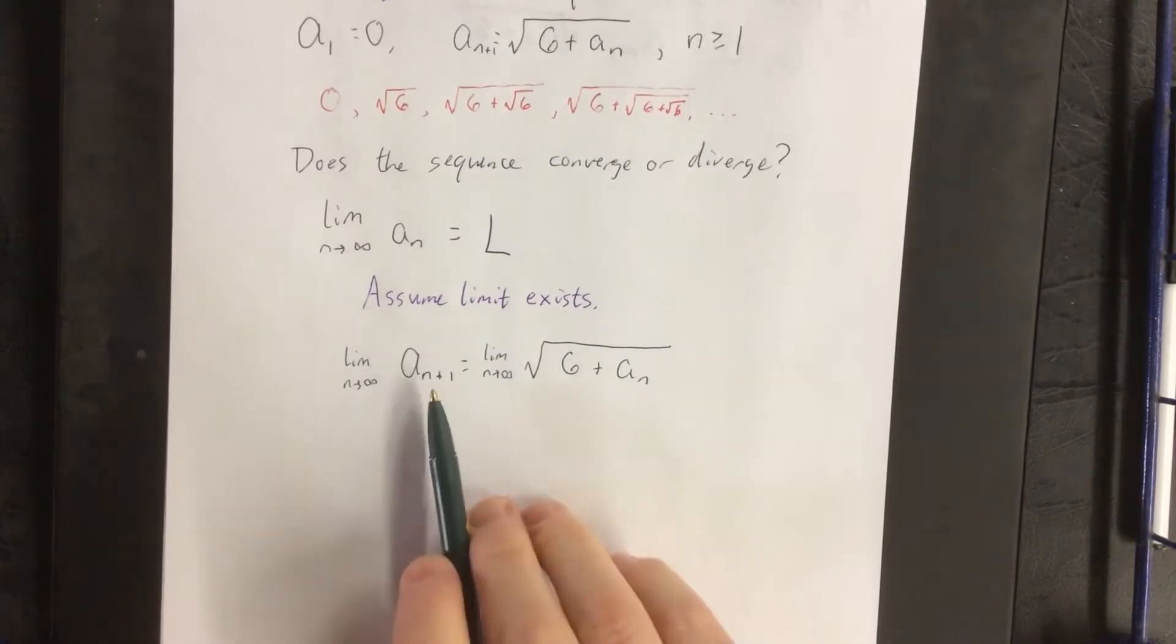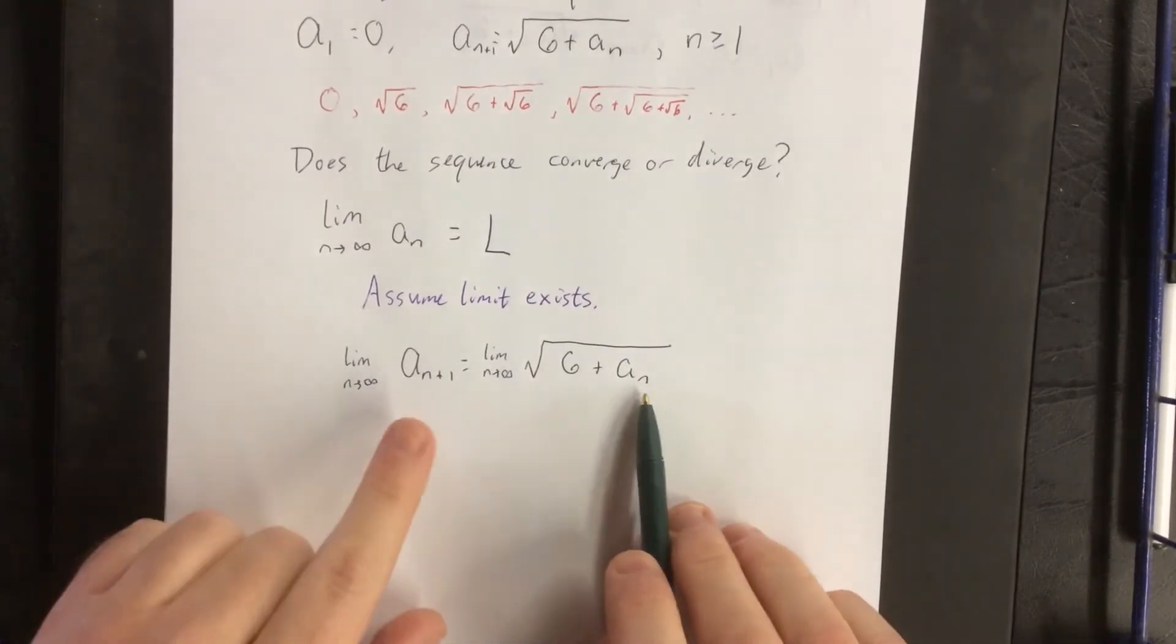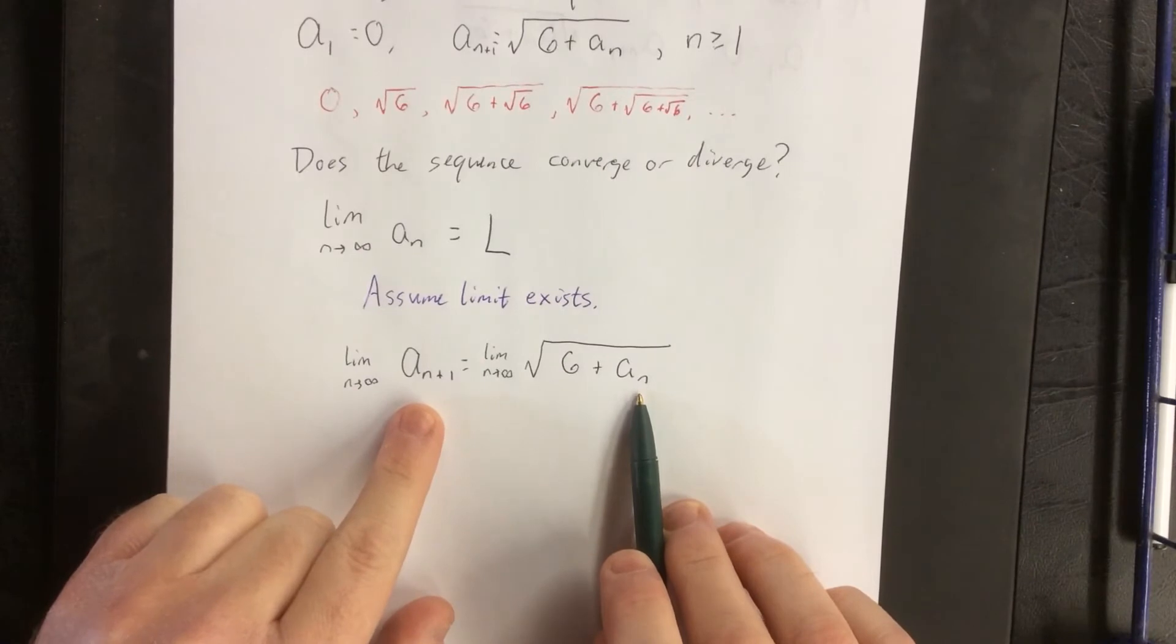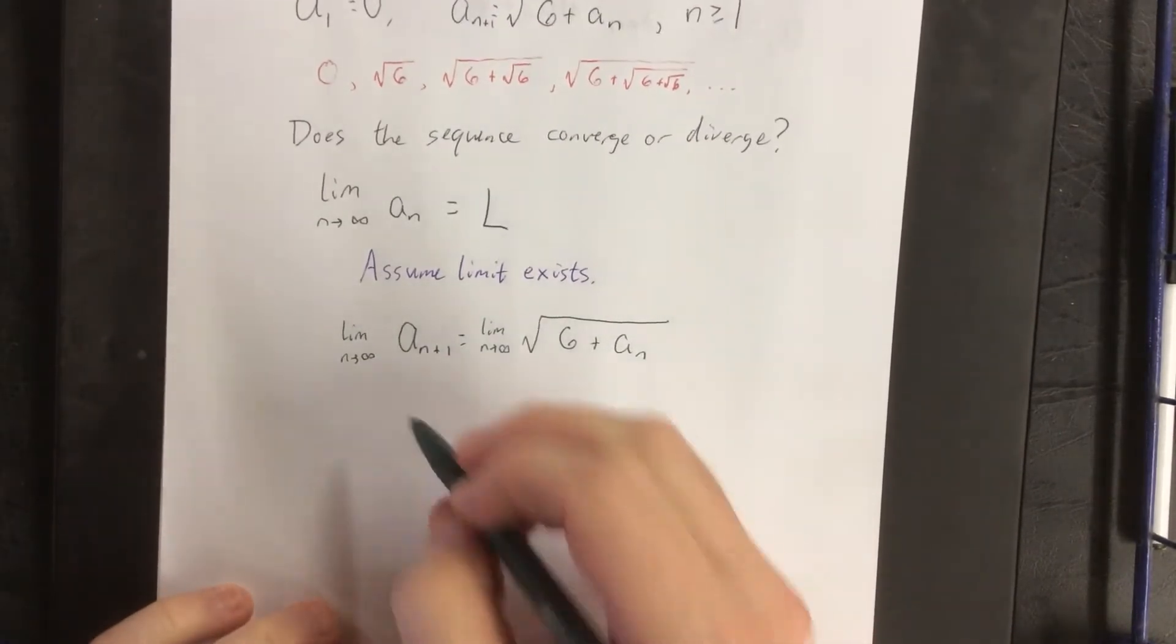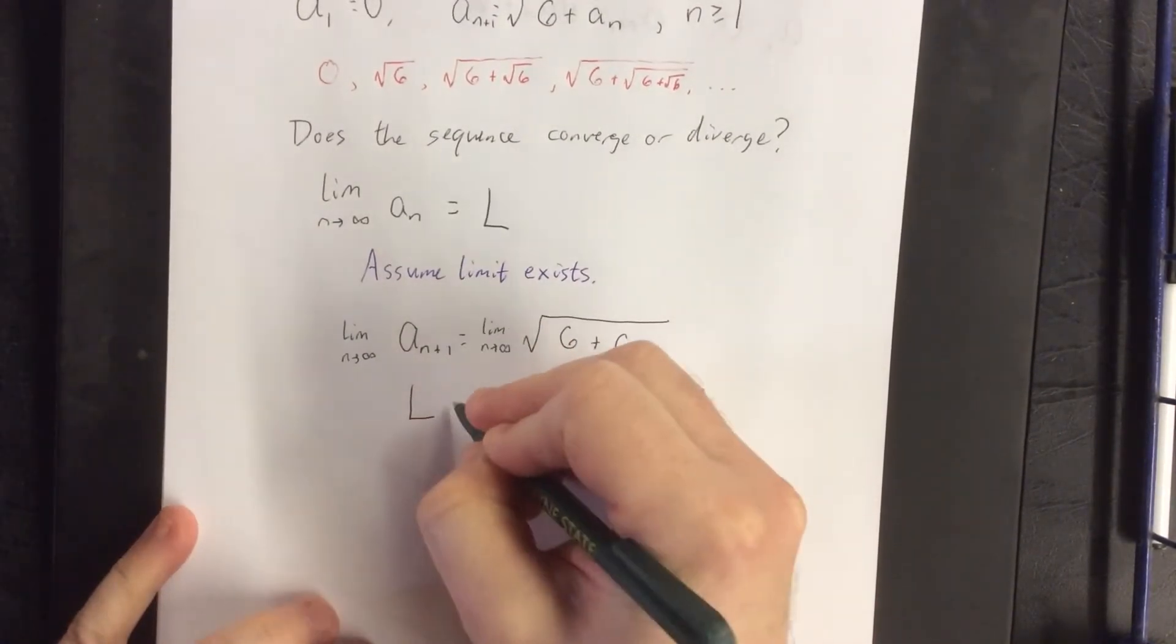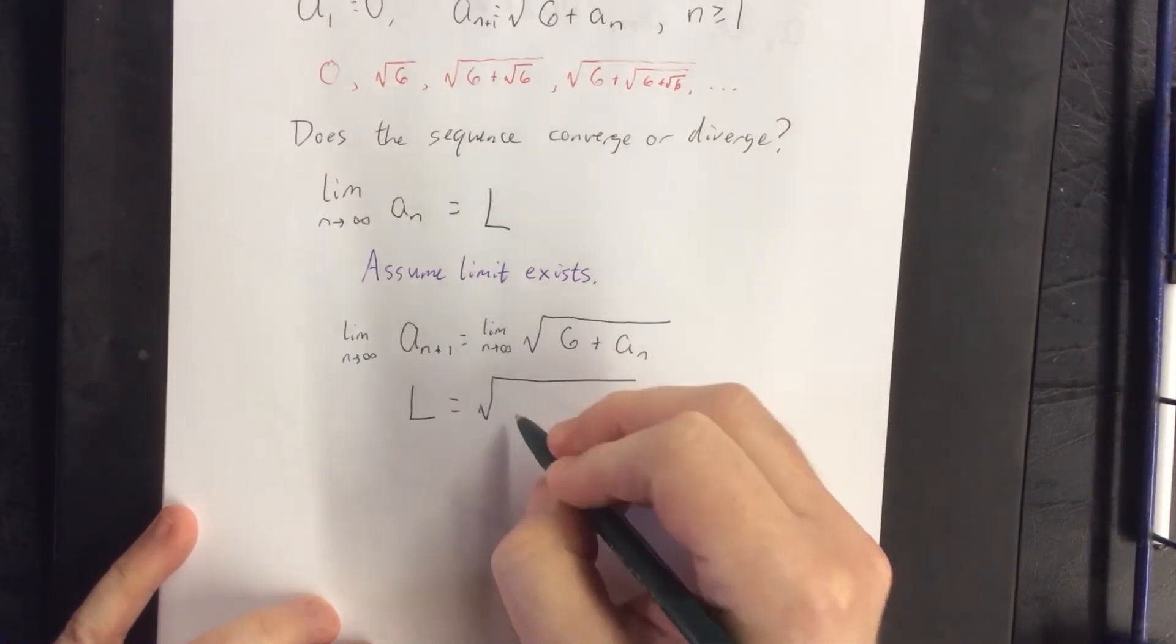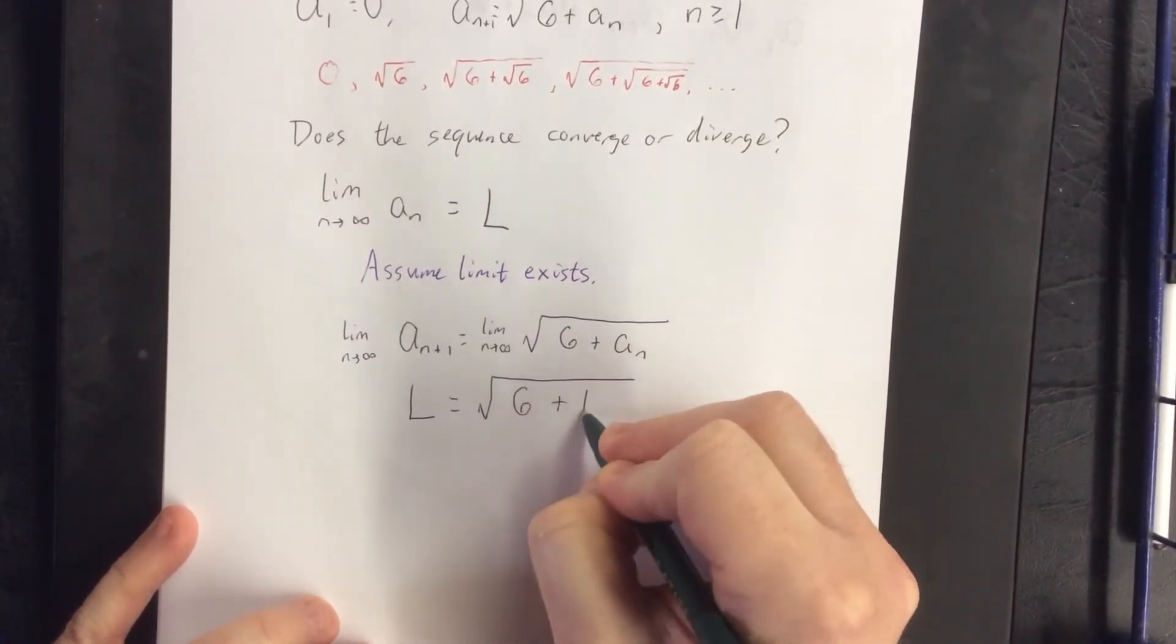It shouldn't matter if we're talking about the n plus 1th term or the nth term, n is going to infinity in both of these cases. So what that tells us is that the left hand side will converge to L and this part of the right hand side will converge to L as well.